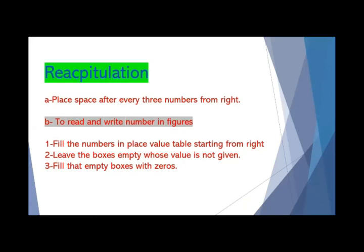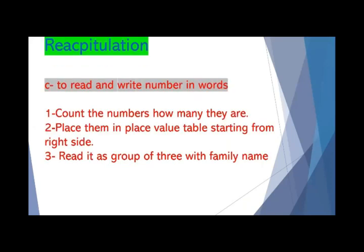Now let's recapitulate what we have covered. Place a space after every three digits from the right in the international place value system. To read and write numbers in figures: fill the digits in the place value table starting from the right; leave boxes empty whose value is not given; then fill those empty boxes with 0. To read and write numbers in words: count the digits, place them in the place value table from the right, and read as a group of three with the family name.